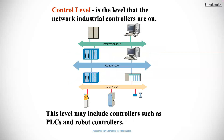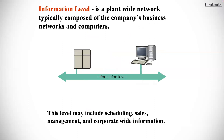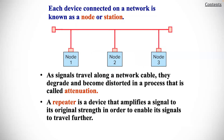The control level is the level that the network industrial controllers are on. This level may include controllers such as PLCs and robot controllers. At the information level is a plant-wide network typically composed of the company's business networks and computers. This level may include scheduling, sales, management, and corporate-wide information.